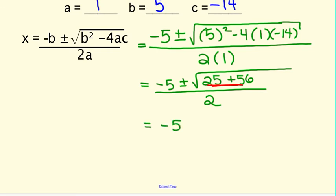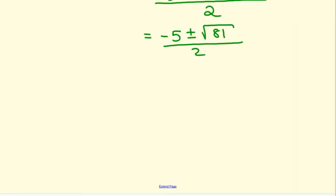So we have negative 5 plus or minus the square root of 81 over 2. If you remember, 81 is a perfect square. 81 is 9 times 9, so the square root of 81 is 9. So negative 5 plus or minus 9 over 2.